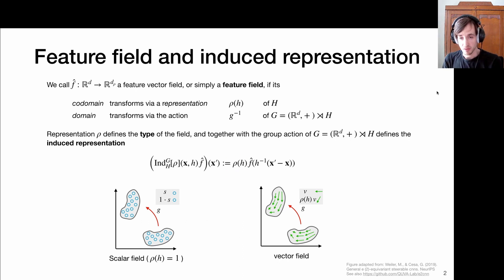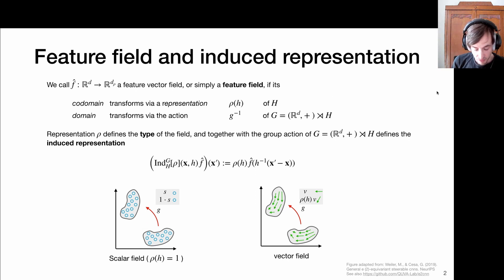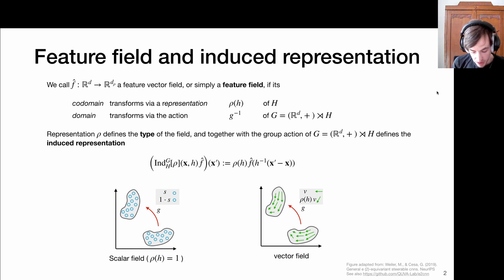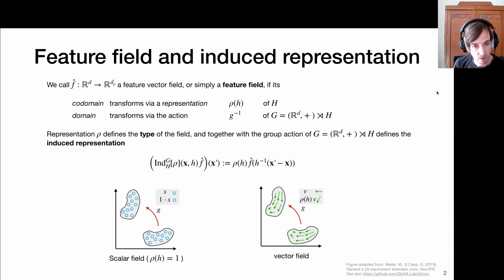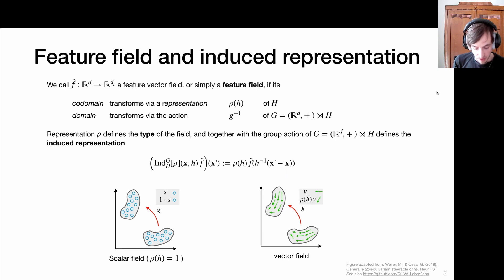We've seen these kinds of things before — it's intuitive. If I have just a scalar field, say a field of gray values, and if I rotate such a field of scalar values, then I really only need to transform its domain, because the pixels or gray values don't have any orientation-oriented information in them. So it's really the transformation of the domain — G inverse applied to the domain — and on the co-domain, we just multiply by one. This is the trivial representation.